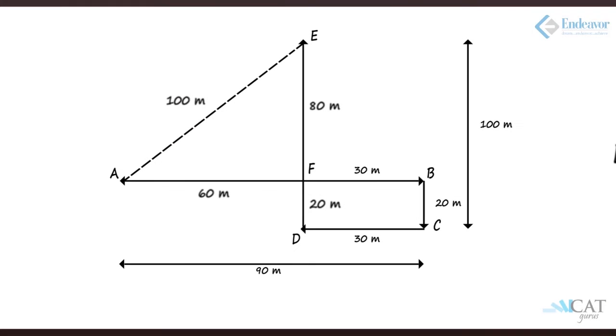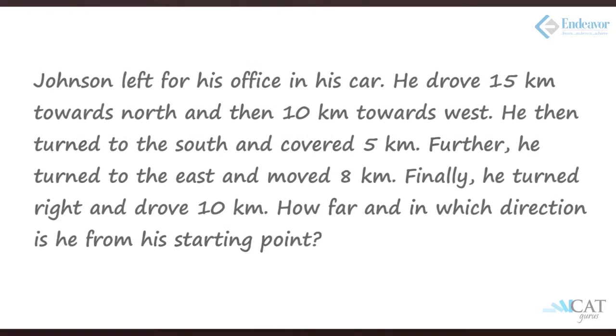Here they could have asked us to apply the Pythagorean theorem. Since AF = 60m and FE = 80m, taking the square root of 60² + 80² gives the distance AE, which is what the question asks — the distance from the starting point — confirming 100 meters.